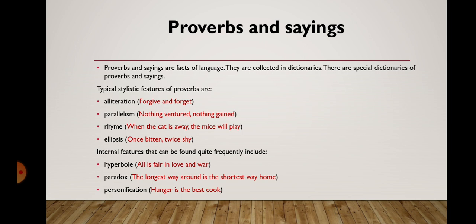These are the typical stylistic features of proverbs. Internal features that can be found quite frequently include: hyperbole — 'all is fair in love and war'; paradox — 'the longest way around is the shortest way home'; and personification — 'hunger is the best cook.'